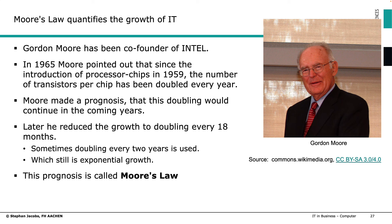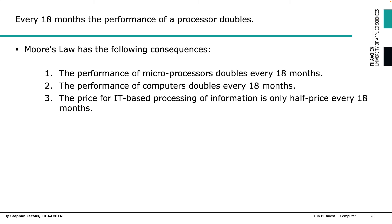Later, Moore revised his observation to 18 months. So doubling every 18 months means a doubling, and a doubling, and a doubling — always a factor of two, which is simply exponential growth. The performance of microprocessors doubles every 18 months, meaning computer processing speed doubles. And since chip prices are roughly constant, the price of IT processing is halved every 18 months.